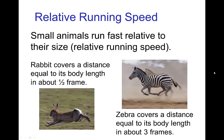A rabbit covers a distance equal to its body length in about half a frame, whereas a zebra covers the distance equal to its body length in about three frames. So when we're watching something running, that gives us a sense of the size of the animal.